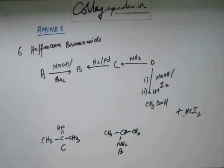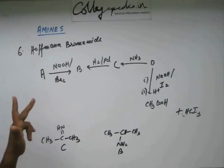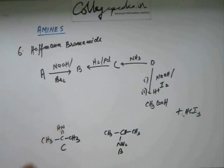Now you are getting B if you are doing something on A. You look at the reagent, this something carries out which reaction? This something carries out Hoffman Bromamide. You see Br2 and you see NaOH. This is the reaction, this is the reagent for Hoffman Bromamide.